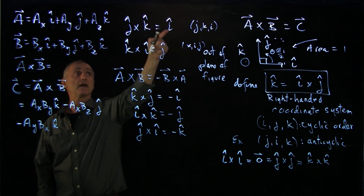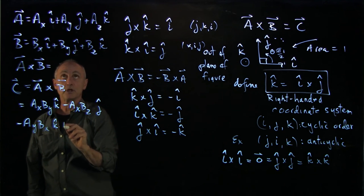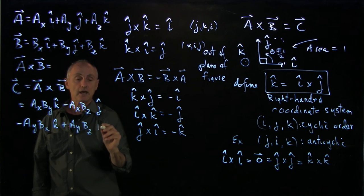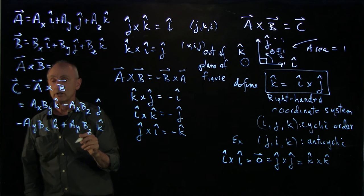And j hat cross k hat. That is cyclic. So that's plus ay bz k hat. And now we have our last two terms.